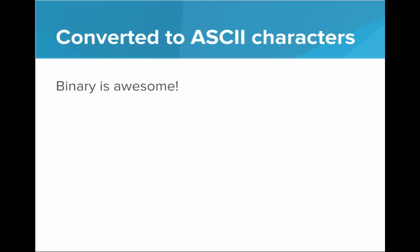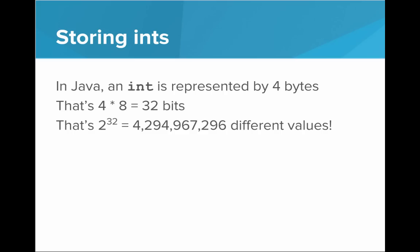Okay, so that's how we can do characters. What about doing numbers? So in Java, an int is represented by four bytes. That's four times eight or 32 bits. That means that's two to the 32 or over 4 billion different values. That's a lot of values. But how are we going to use all of those different values to represent all the integers we might want to use when we're programming? Well, we could say, okay, with these two to the 32 different values, let's represent the numbers one all the way up to two to the 32. But that leaves out zero, we need to use zero, right?